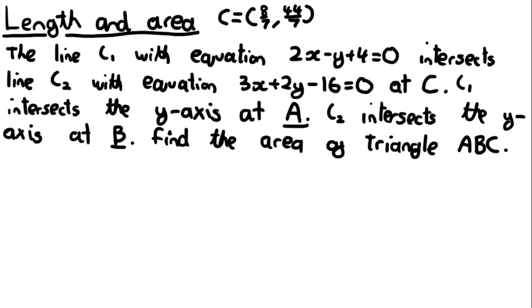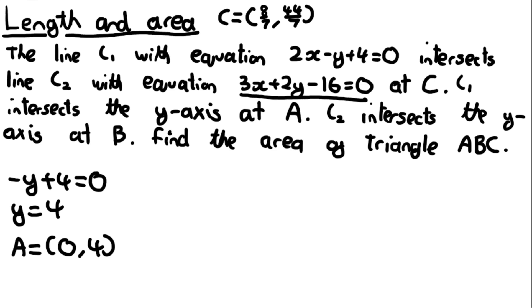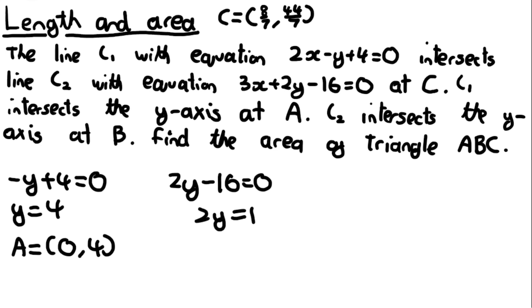Now we need to find points A and B. For A, it's where L1 crosses the y-axis, so set x equal to 0: minus y plus 4 equals 0, giving y equals 4. So the coordinate of A is (0, 4). For B, where the second equation crosses the y-axis with x equal to 0: 2y minus 16 equals 0, so y equals 8. Therefore B is (0, 8).